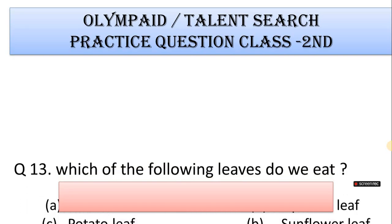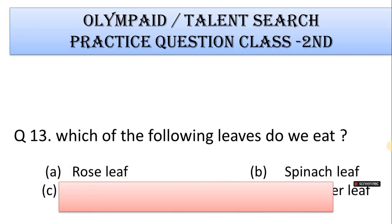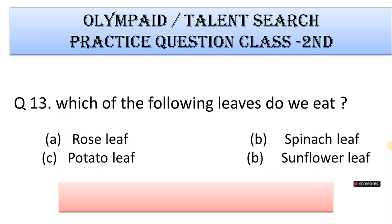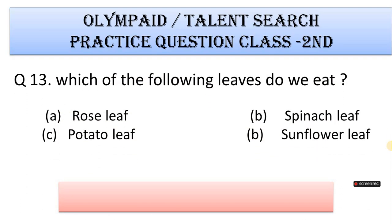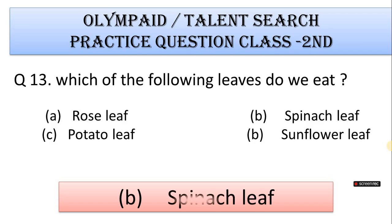Number 13: Which of the following leaves do we eat? A. Rose leaf, B. Spinach leaf, C. Potato leaf, D. Sunflower leaf. Correct answer is Option B. Spinach leaf.